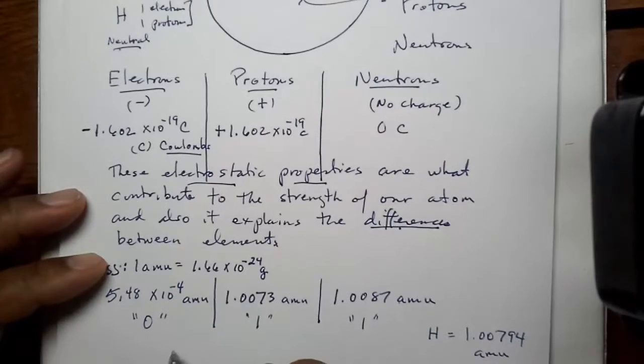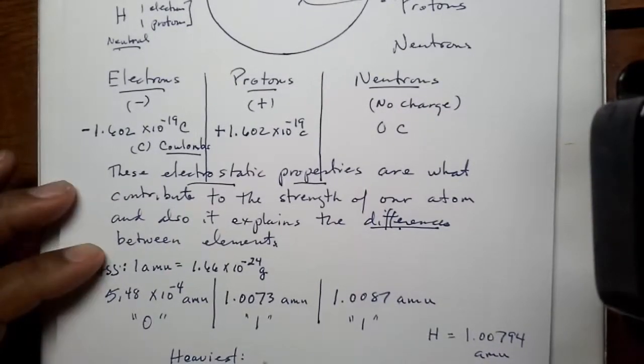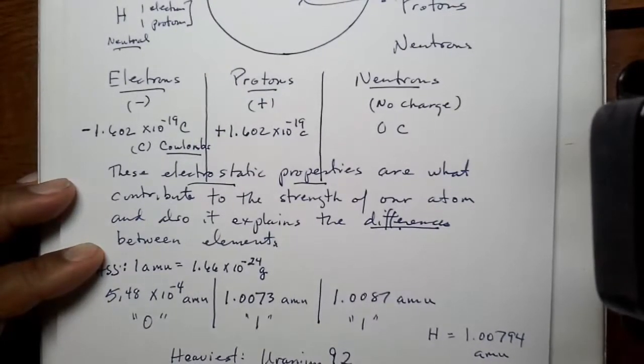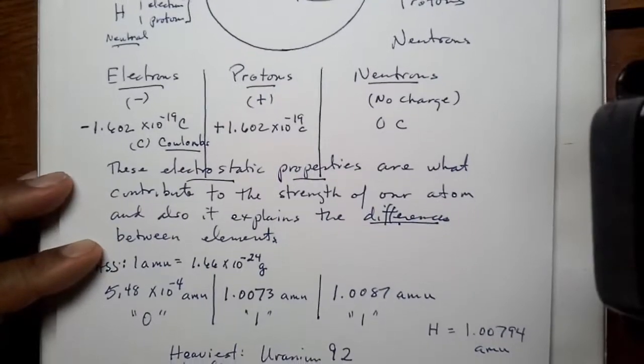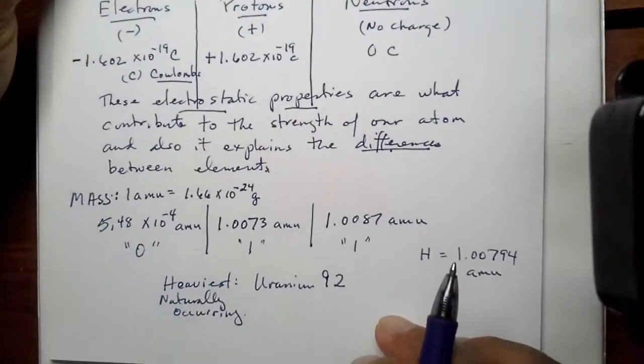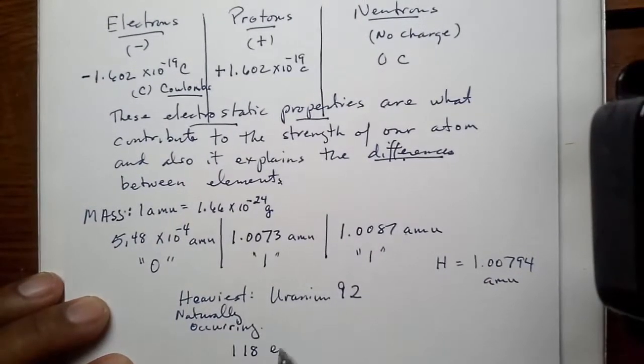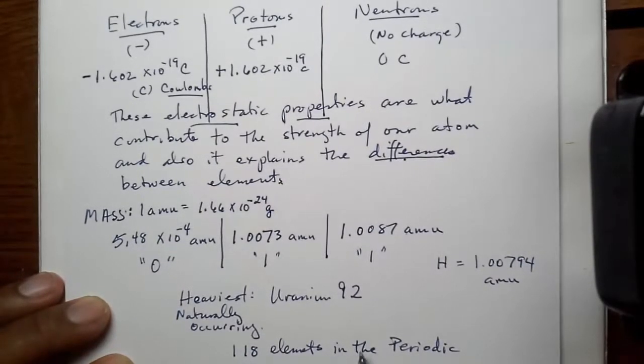Now, the heaviest, we'll get into the periodic table in probably in part two. But the heaviest elements in the periodic table is uranium. Uranium 92. That is the heaviest naturally occurring element. Okay. So, there are many, many elements in the table. As a matter of fact, there are 118 elements in the periodic table. And we'll talk about them, not all of them, but we'll talk about the major categories.